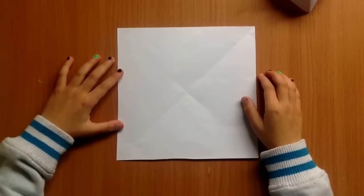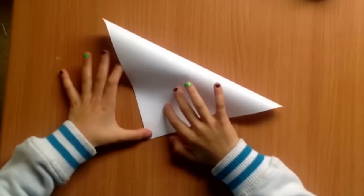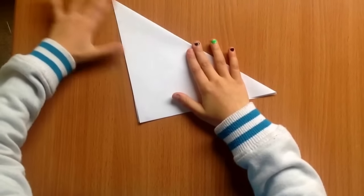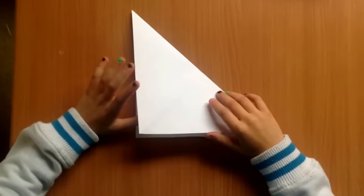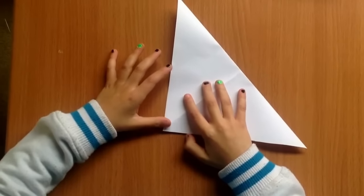Step 1. Fold your sheet of paper in half diagonally, like so, and make an X. Now do the same thing. Open it like that and then do the same thing in the opposite direction.